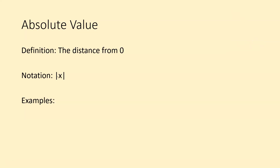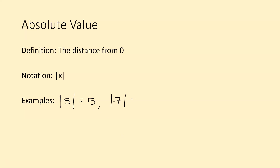This is the notation: whatever your number is, you put absolute value bars on each side. So some examples — the absolute value of 5, like we talked about before, is 5. So absolute value of 5 equals 5. Absolute value of negative 7 equals 7. So make sure you have this in your notes.